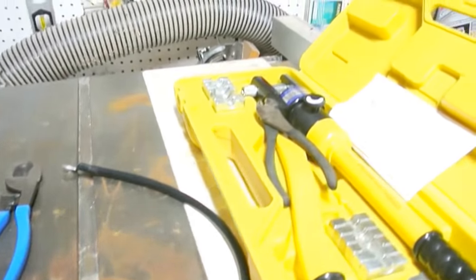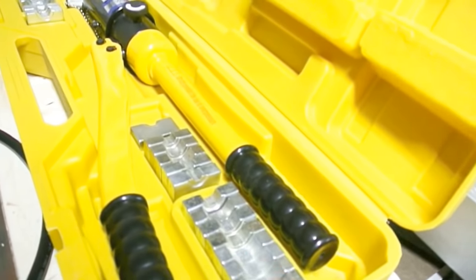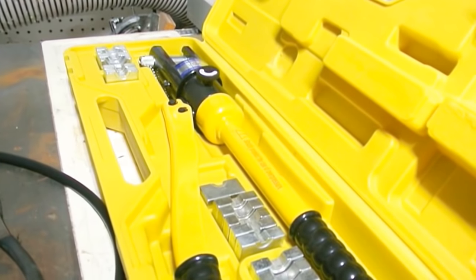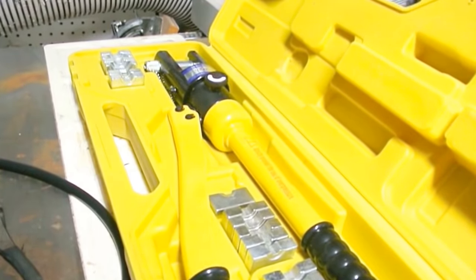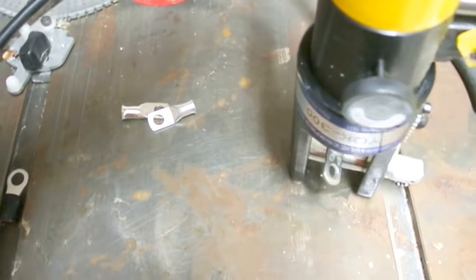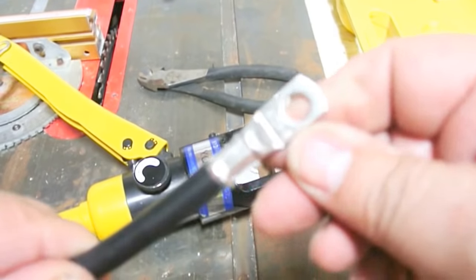Now there's only one way to do this and do it right. I have this 16-ton press. These are metric, so you have to interpolate between 4 gauge and what the metric equivalent is. You also need a good set of cutters to do this right. I just go as far as I can. Here we go, that ain't too bad, it's on there.